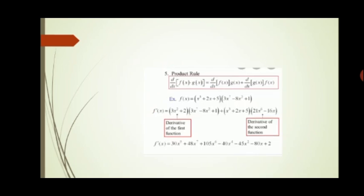The example given has two functions: (x³ + 2x + 5) and (3x⁷ − 8x² + 1). Taking the first bracket as the first function, its derivative is 3x² + 2, multiplied by the second function as it is. Then we add the first function times the derivative of the second: the derivative of 3x⁷ is 21x⁶, again using the rule that xⁿ differentiates to n·x^(n−1). Simplifying gives the final answer.